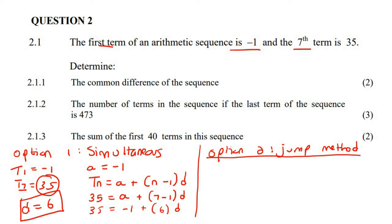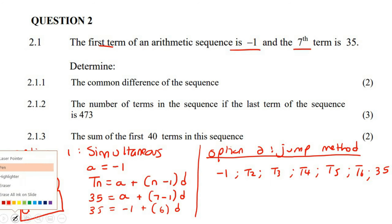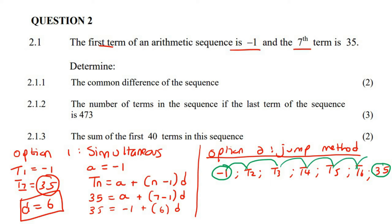Now option number 2, a lot of learners like to use this one as well, but I think more learners prefer this one. So what you do is the following. You know that term 1 is negative 1. Then you've got term 2, term 3, term 4, term 5, term 6, and then there's term 7, which is 35. So what they do, the learners that enjoy this one, they realize that to go from here to here, how many jumps is that? 1, 2, 3, 4, 5, 6. There are 6 jumps.